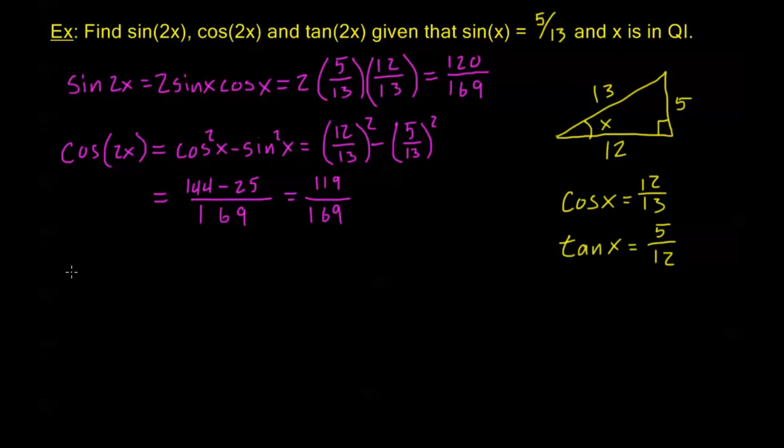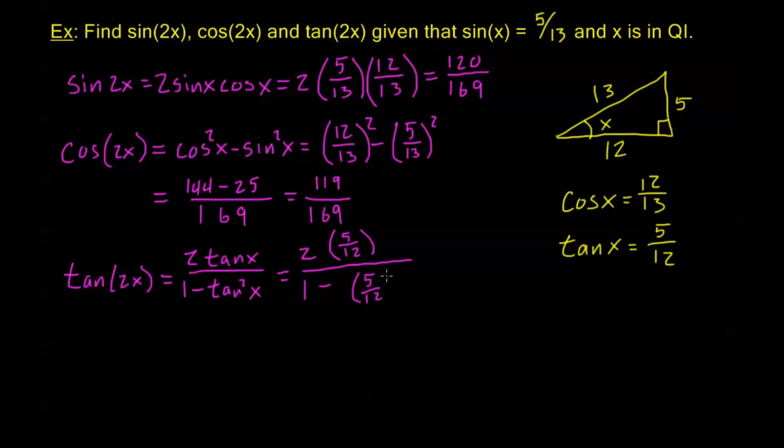Now tangent of 2x, we know from our formula, this is 2 tangent x over 1 minus tangent squared x. Plugging in, I'm going to have 2 times 5 twelfths all over 1 minus 5 twelfths squared.